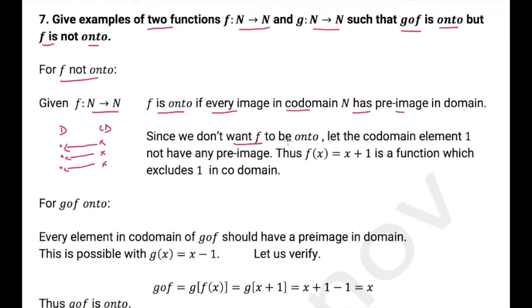Since we do not want f to be onto, let the codomain element 1 not have any pre-image. Since I have 1, 2, 3, 4 etcetera and I have 1, 2, 3, 4 here. Thus I can write f(x) = x + 1, because I do not want 1 to have any pre-image. Since it is N to N, it is much easier.